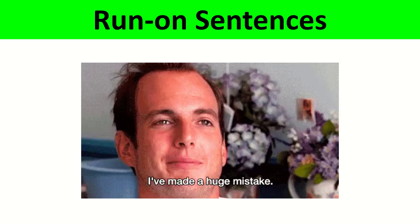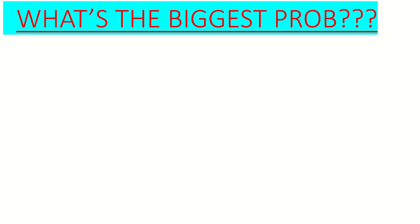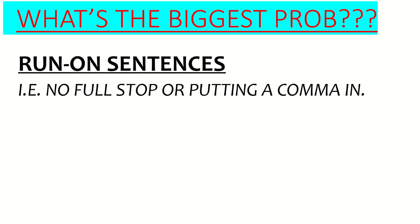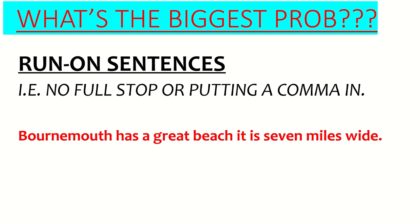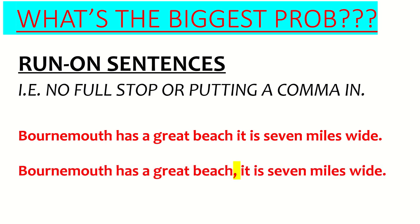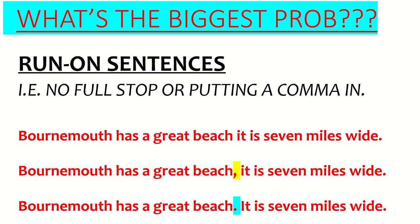Run-on sentences are probably the biggest problem students have. If you do this, I think your writing would go up one grade if you cut it out. A run-on sentence is putting no full stop — or a comma — where you need separate sentences. A typical example: 'Bournemouth has a great beach, it is seven miles wide.' That comma is wrong. You need either a full stop — 'Bournemouth has a great beach. It is seven miles wide.' — or a linking word like 'and,' 'but,' or 'because.' Don't just put a comma in there.